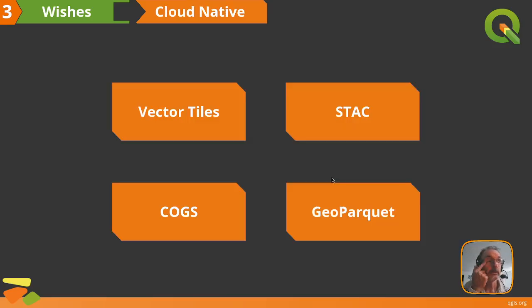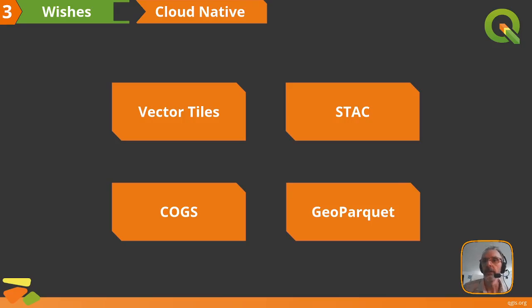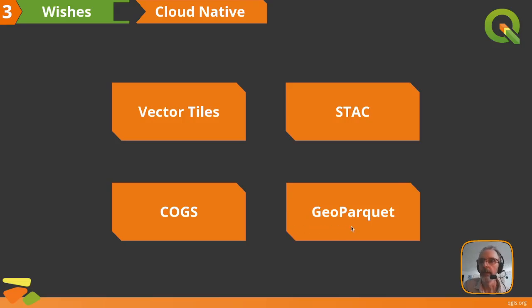I'm also really looking forward to seeing QGIS adopt more cloud-native GIS components. We've already seen a bunch of the building blocks supported in QGIS, and I look forward to cloud-native vector tile support with range requests. There are already server-side technologies supporting this. Native STAC support is coming — there's already a QEP for it — and we also have COGs and GeoParquet support via GDAL and OGR. It would be great to see these things become more seamless so we can easily work in the emerging cloud-native environment.